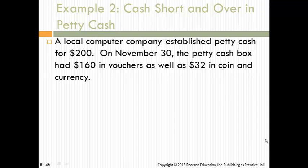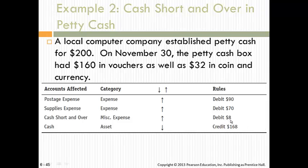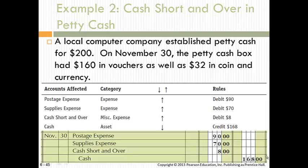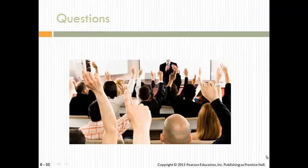Here's another example: a local computer company established petty cash for $200. On November 30th the petty cash box only had $160 and they only had vouchers for $32, so they're missing $8 and have to book it somewhere. To reiterate the importance of this chapter: the bank reconciliation is very important, and your controls over any type of cash are very important. Take a look at the PowerPoint posted on Blackboard, and as you start your homework if you have any questions, give me a call or send an email.